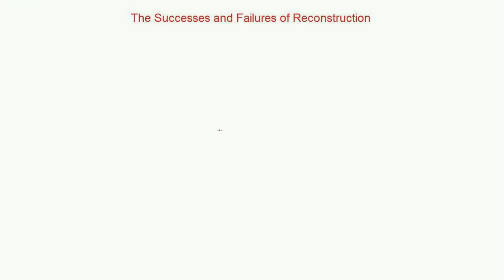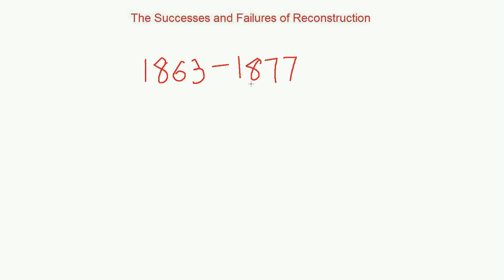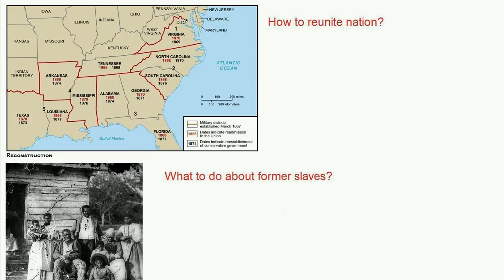Today we'll be focusing on the successes and failures of Reconstruction. Reconstruction is a period of time from roughly 1863 until roughly 1877. This is a period of time when both Presidents as well as Congress struggled with the challenge of bringing the South back into the Union politically, economically, and socially. Leaders in the North faced a number of key challenges as they struggled to bring the South back into the Union in the wake of the American Civil War.